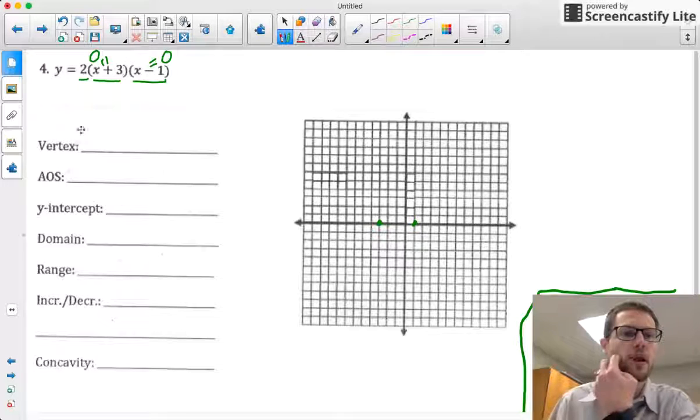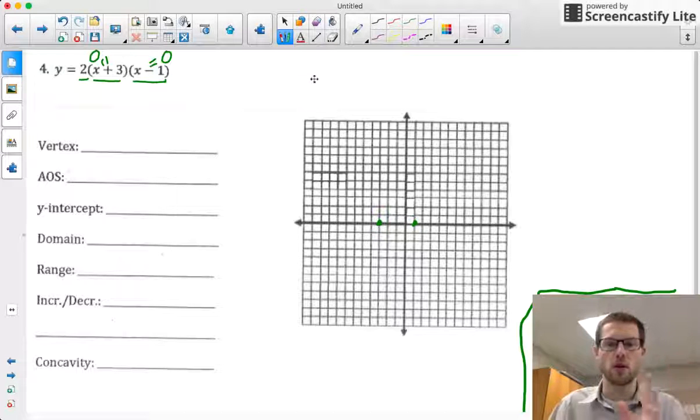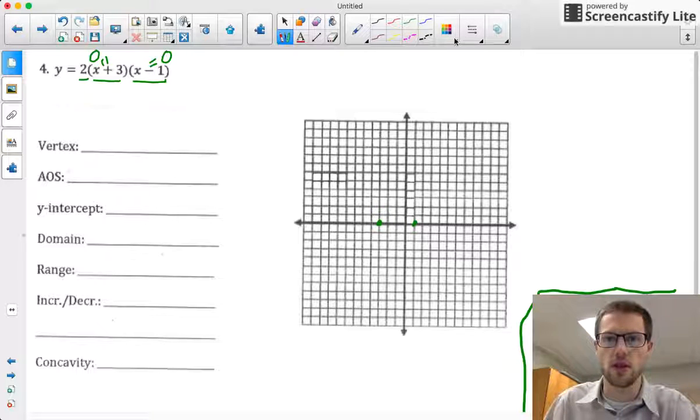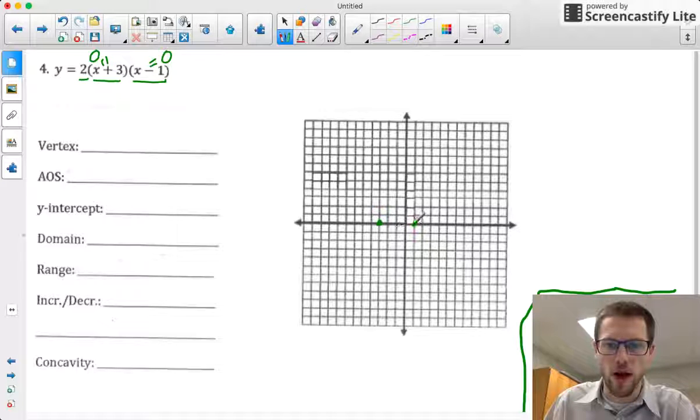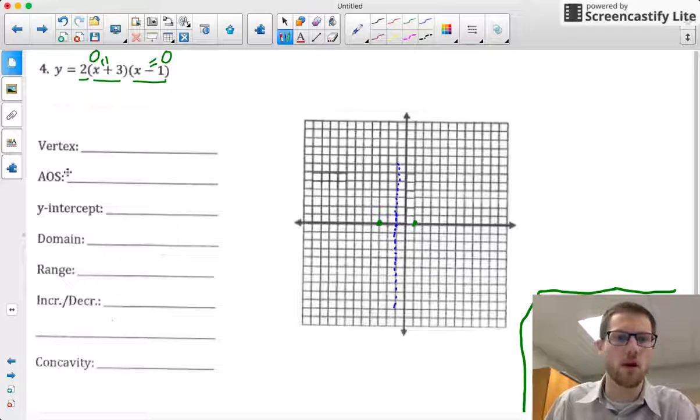And then the next part is to find the vertex. I'm going to need to find what my midpoint is between these two roots, since the axis of symmetry is always smack dab in the middle. I can either kind of eyeball this thing. It looks like right at -1 is my axis of symmetry. So I can even write this as x = -1.